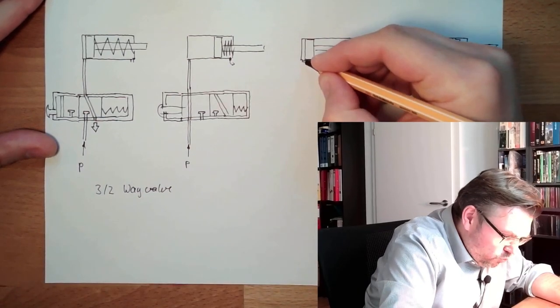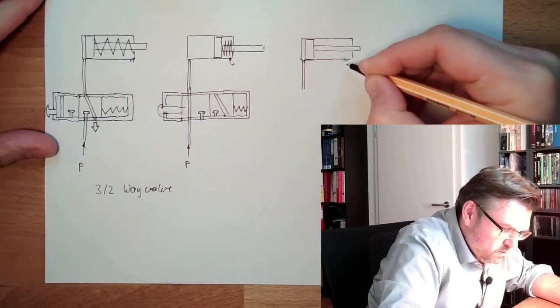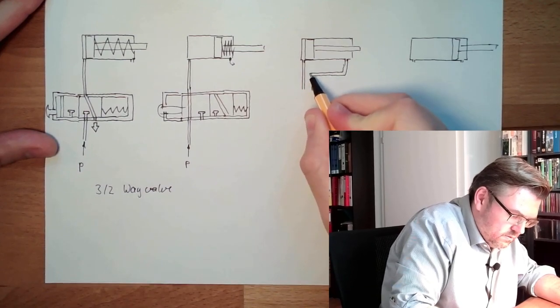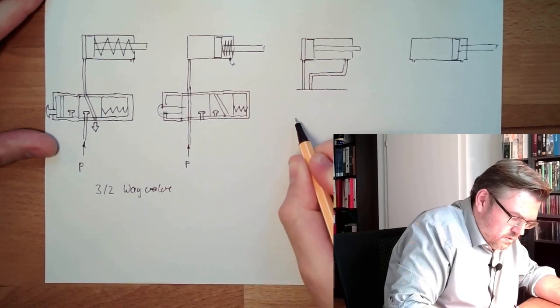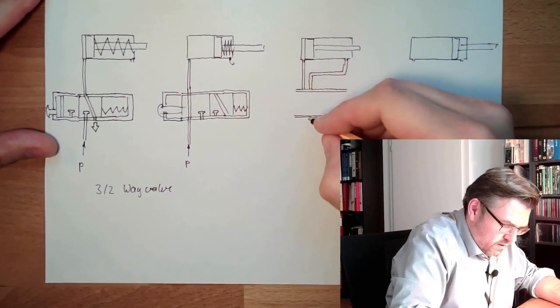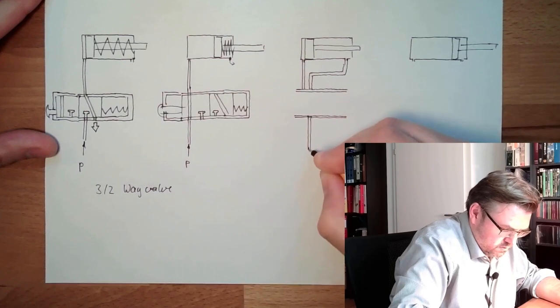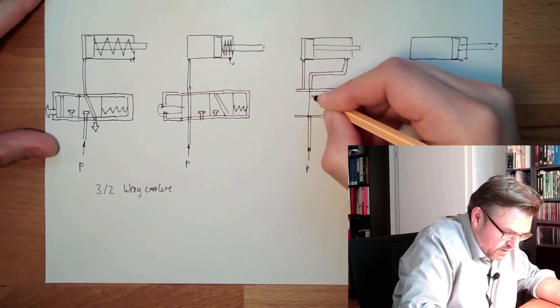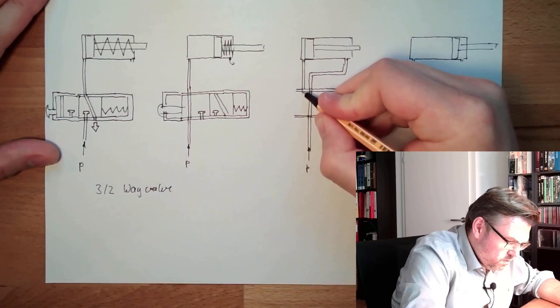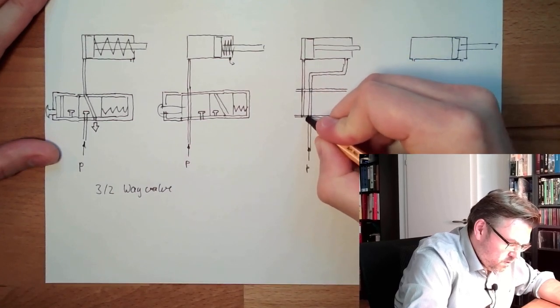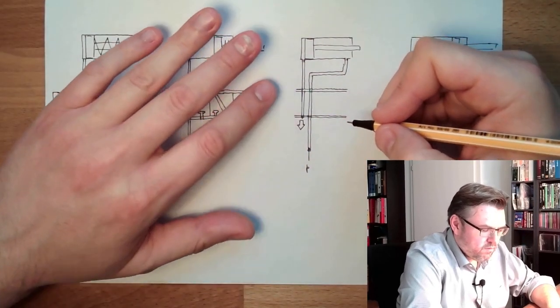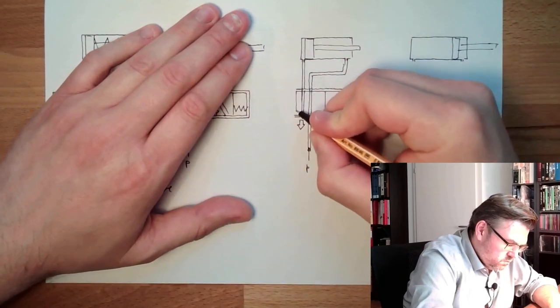So how would it look like? Just draw the lines, do again a valve. And with that, here is the pressure line. P. And I will simply connect it. Then here we have the exhaust line. This would be okay. This would be the switching position.